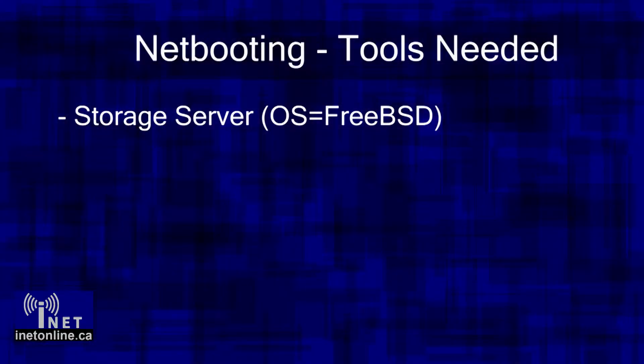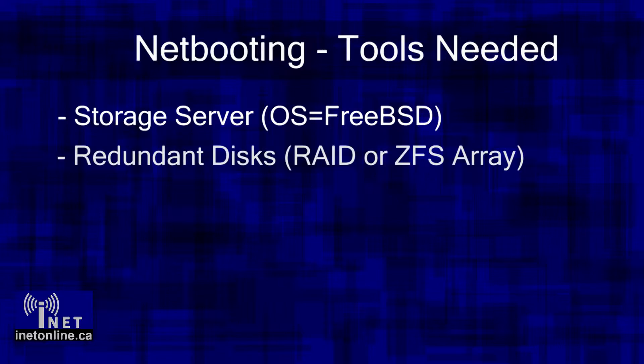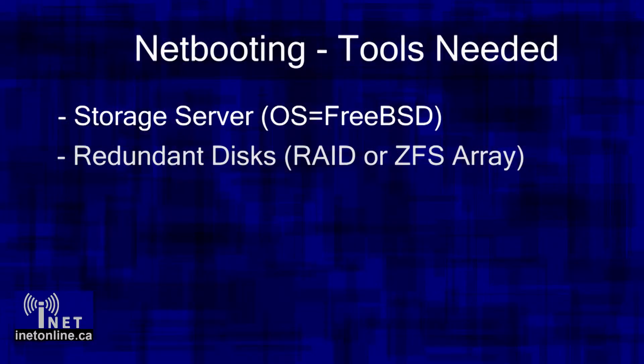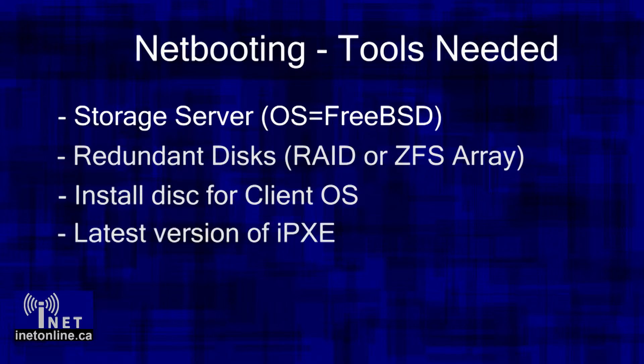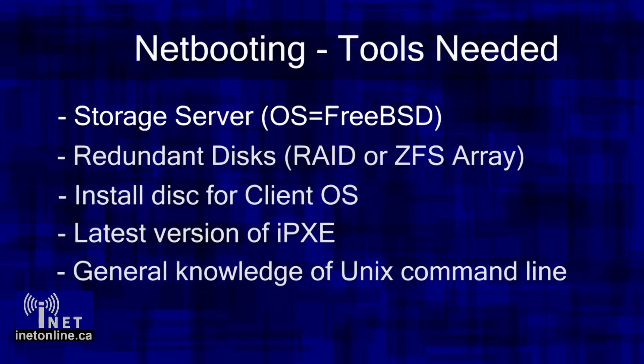Now that you've decided that netbooting is for you, it's time to start gathering the components you'll need to build your netbooting system. In this example, I'm going to be using FreeBSD as the operating system on my server. I would highly recommend the use of several disks for your storage array and configuring them in a RAID configuration, either with a hardware RAID controller or using the ZFS file system built into FreeBSD. Further information about configuration of ZFS file systems can be found on the FreeBSD website. You will also need a copy of your client operating system such as Linux or Windows, as well as the latest source code for IPXE, which is the bootloader we will be using in this project. A general working knowledge of Unix systems and a fearless attitude when it comes to the command line is also beneficial.